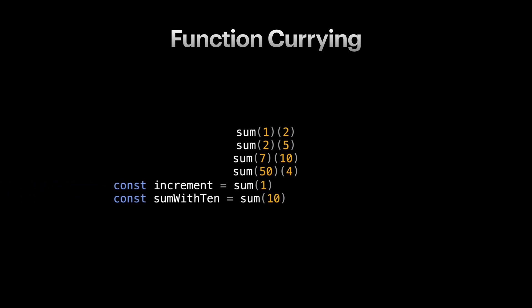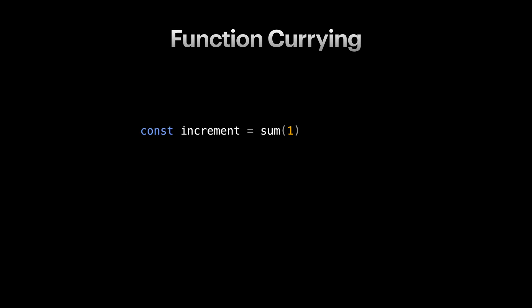Basically, if I just pass only one value to my function, I can name the return function and reuse it. Like for example here, I call the sum with one and name the return function increment. Now we can call the increment function with a number and it returns a number with one value higher.